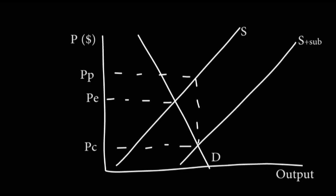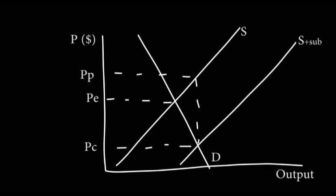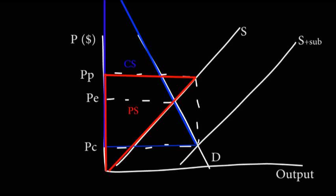A dead weight loss can be shown on the market graph as the area of consumer or producer surplus lost, or a combination of both. For example, if there was a subsidy, it would cause a dead weight loss, because a subsidy will cause the price to consumers and the price to producers to be out of equilibrium. We can find the area of the dead weight loss on the graph by first drawing in the new consumer and producer surpluses.